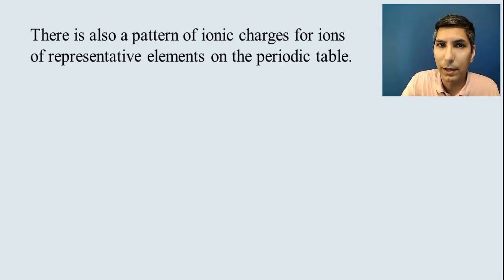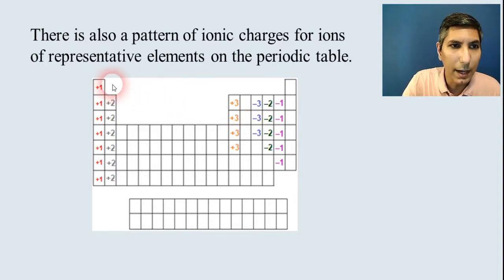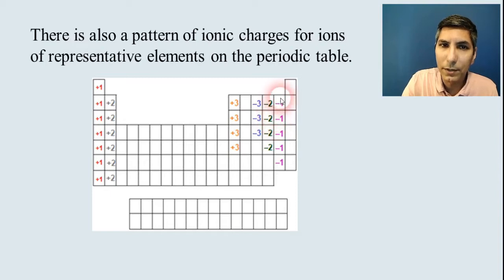Now, because of those valence electrons, this also leads into a pattern of ionic charges for the ions of those representative elements. And so as you look at the table, that tells us that pretty much all these ions of group 1 elements are going to have a charge of positive 1. And all the ions of the group 2 elements will be positive 2. And a lot of these group 13 elements will have positive 3 charges. If we go from the other side of the table,